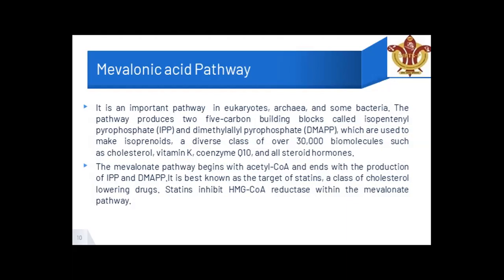Unlike the shikimate pathway, which only takes place in plants and microorganisms, the mevalonic acid pathway differs in that it occurs in eukaryotes, archaea, and some bacteria — meaning virtually every organism runs this cycle. The shikimate pathway forms essential amino acids, so humans do not have a shikimate pathway; we must obtain those amino acids from plant or organism sources. But the mevalonic acid pathway takes place in eukaryotes, archaea, and some bacteria.